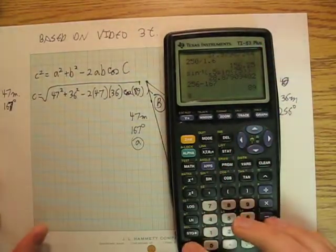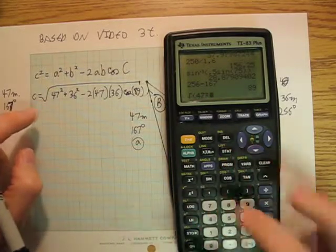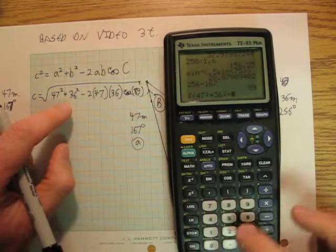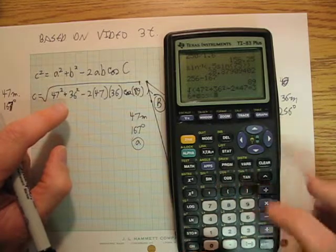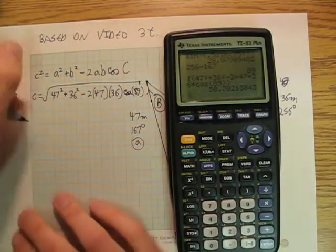Okay, doing that out, 47 squared plus 36 squared minus 2 times 47 times 36 times cosine of 89. 58.7.